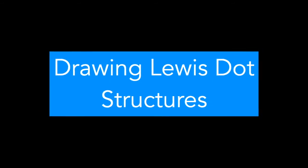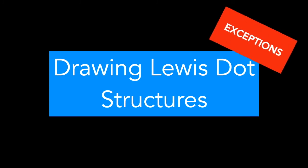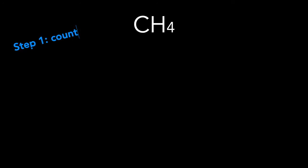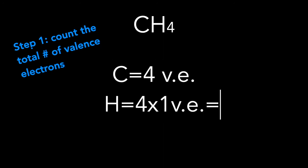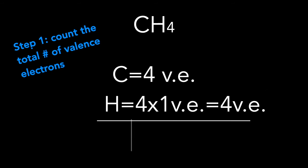Now let's take a look at some exceptions to the rules when drawing Lewis dot structures. Let's use the six steps we learned when drawing Lewis dot structures for the example CH4. Step one: count the total number of valence electrons by looking at the periodic table. Carbon has four valence electrons and hydrogen has one. However, we have four hydrogens in CH4, so we have to multiply one valence electron times four. In total, we have eight valence electrons for CH4.